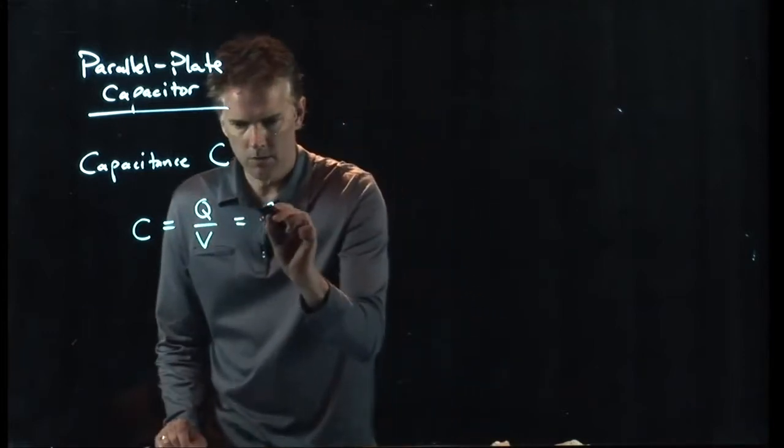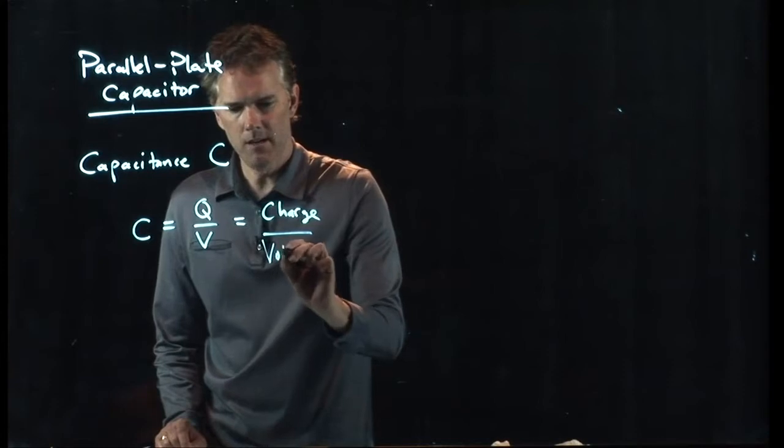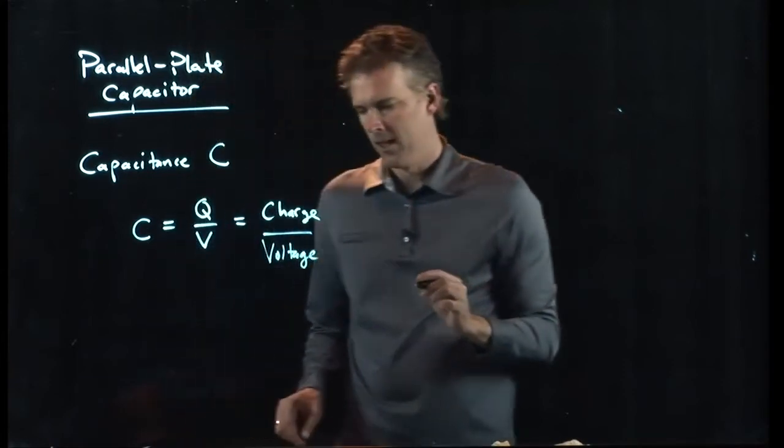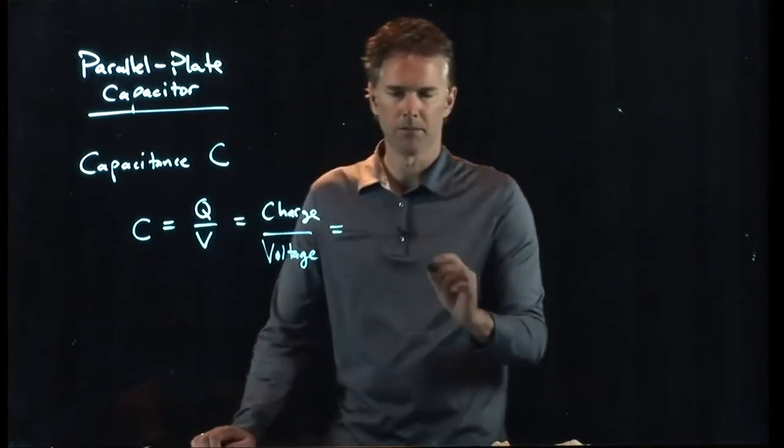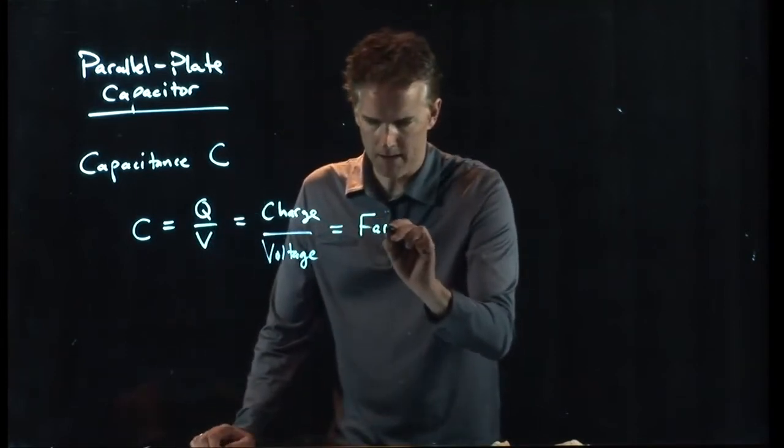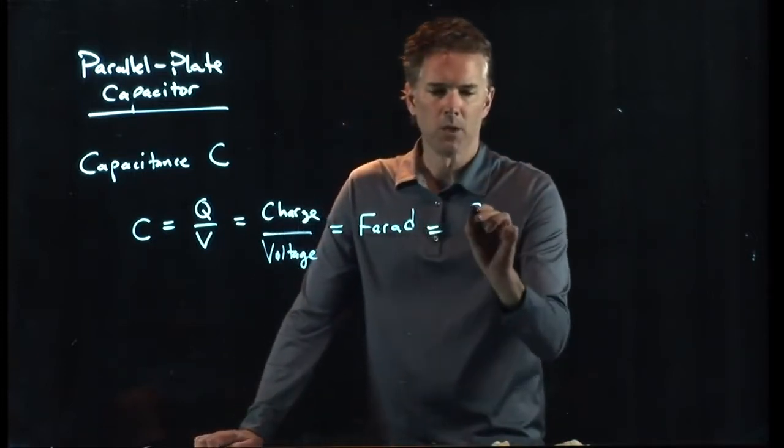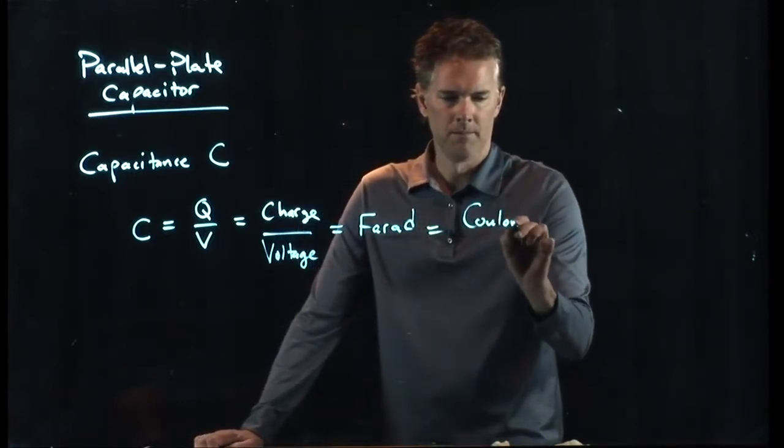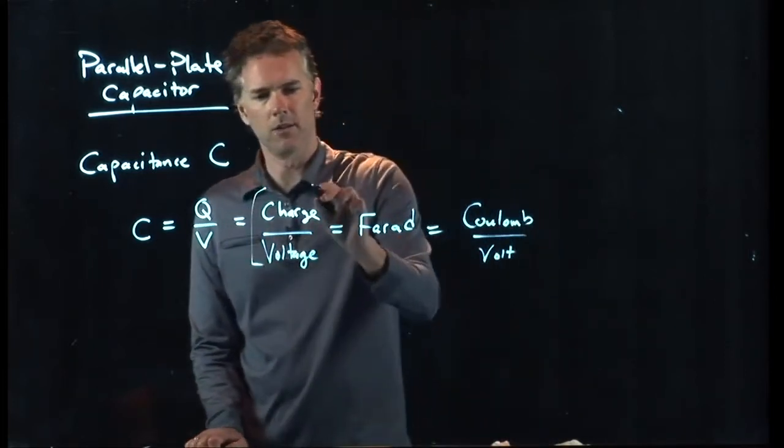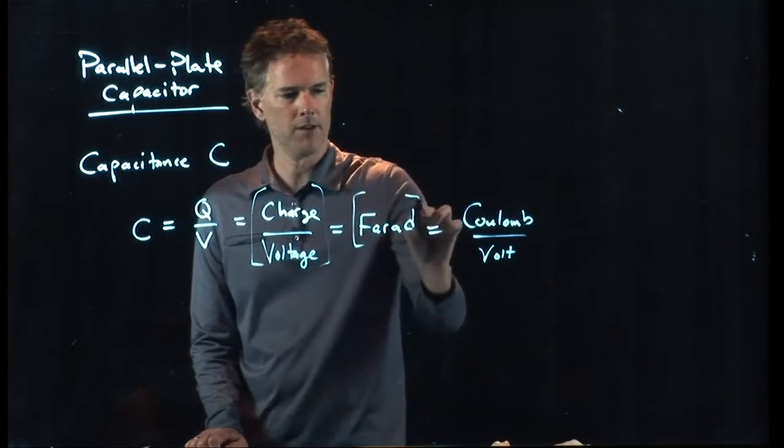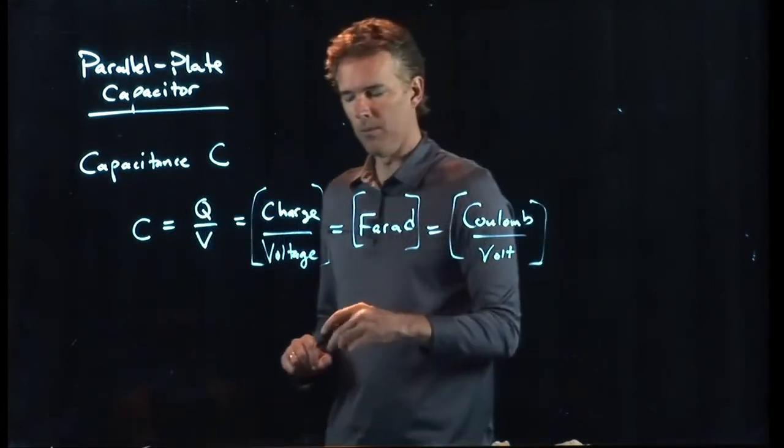It's Q over V. Q is a measure of charge. V is a measure of voltage. And a charge over voltage in SI units is something called a farad. It's also the same as a coulomb per volt. These are all units over here. One farad is one coulomb per volt.